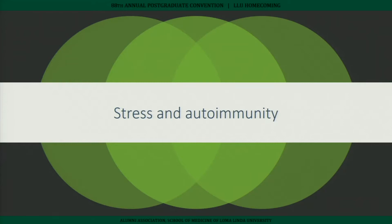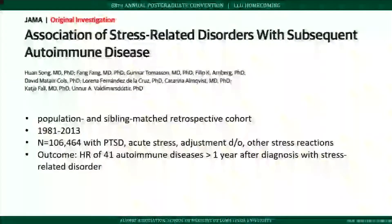Stress and autoimmunity is something discussed with patients daily. Even without the research data, stress clearly affects the body — an upset stomach, diarrhea, increased sweating. These are your body's responses and they do affect your immune system. This topic is discussed with essentially every patient.